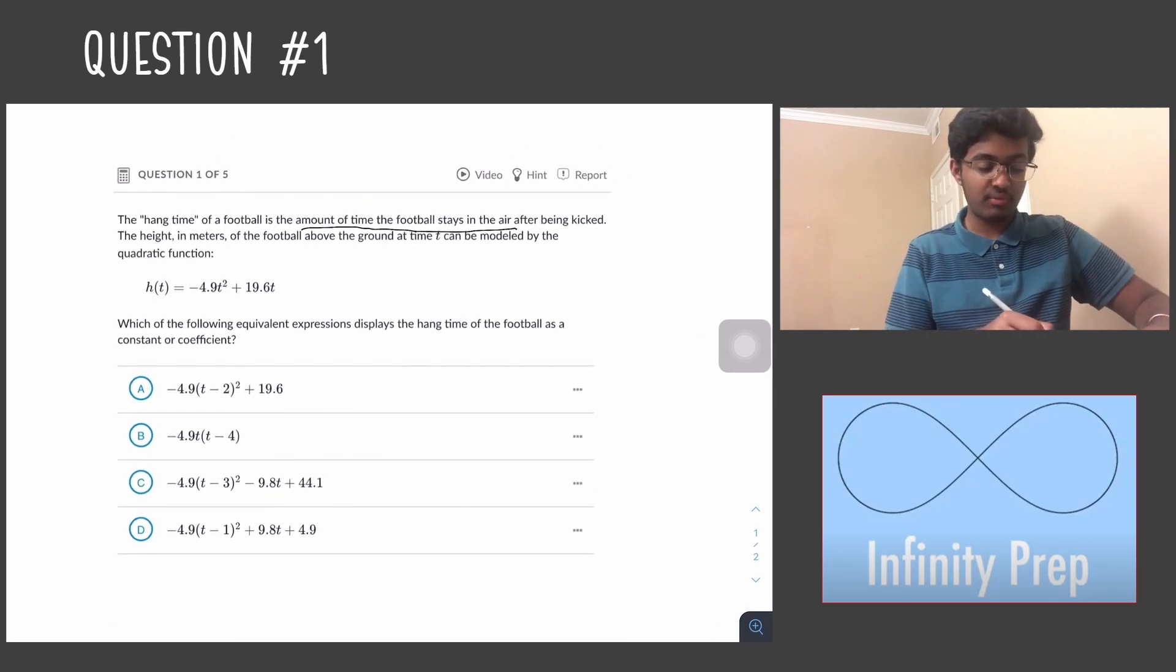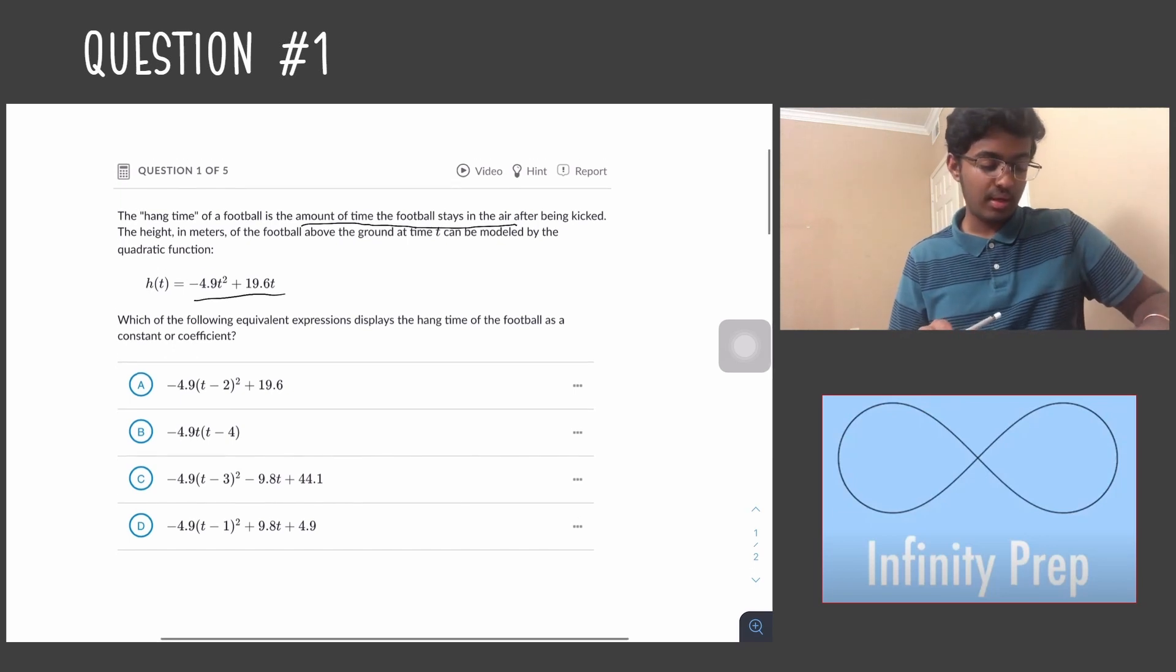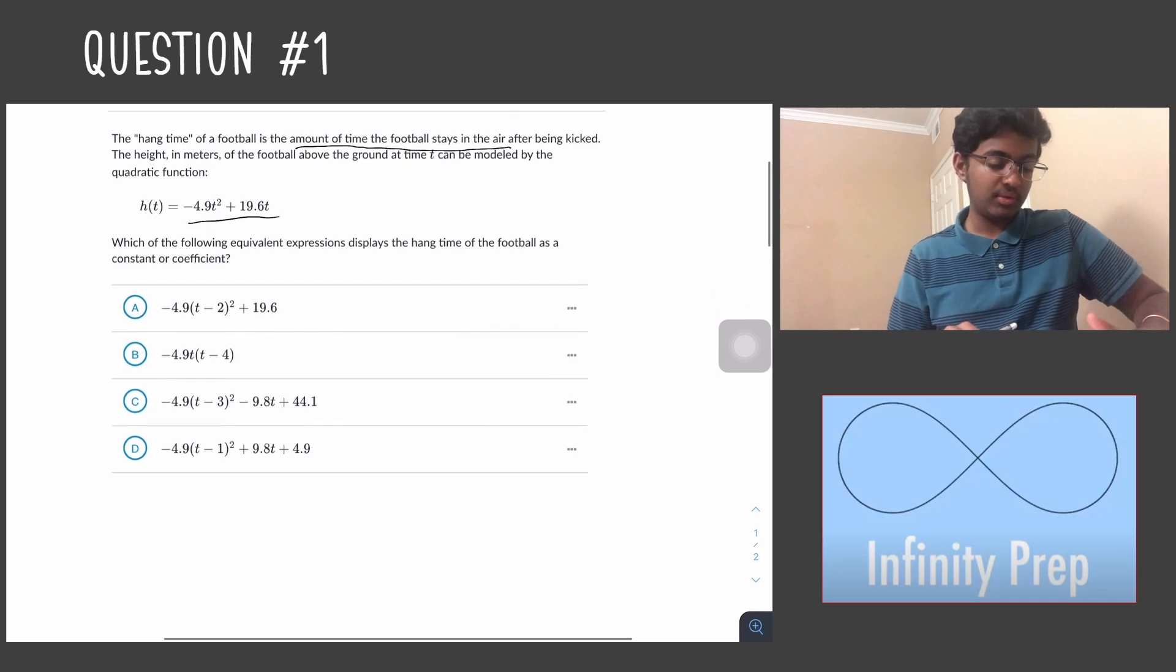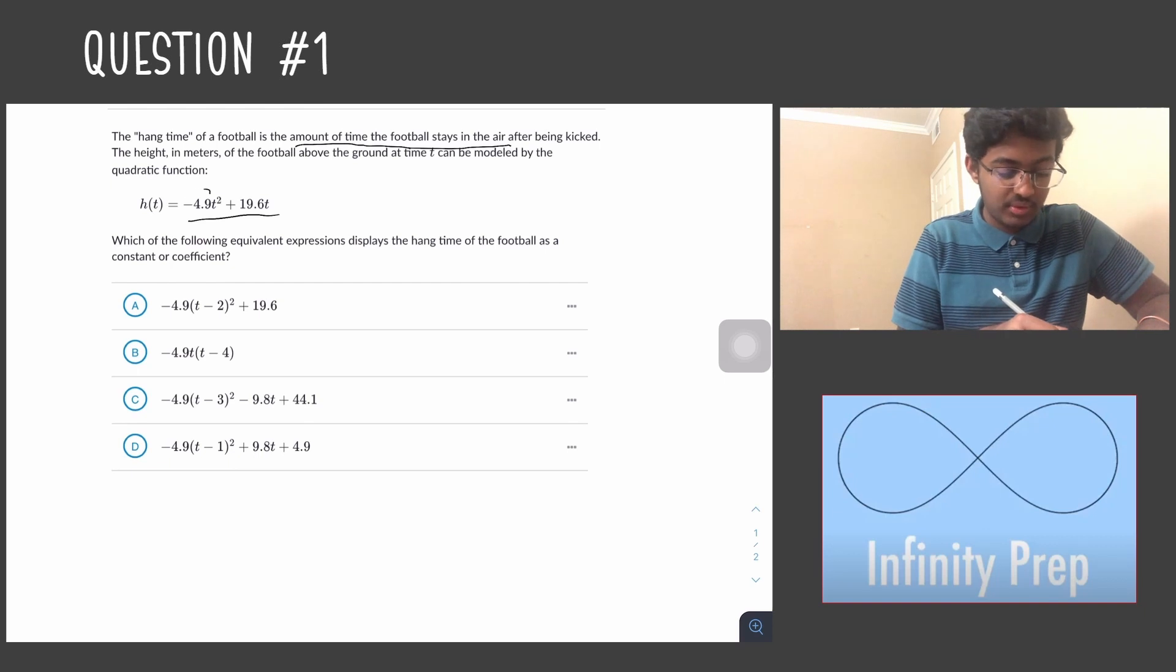One way we can do this is by factoring the equation. We can see that both these terms -4.9t² and 19.6t have a t variable in common, so we can factor that out. We can also factor out the constant -4.9 out of the two terms.